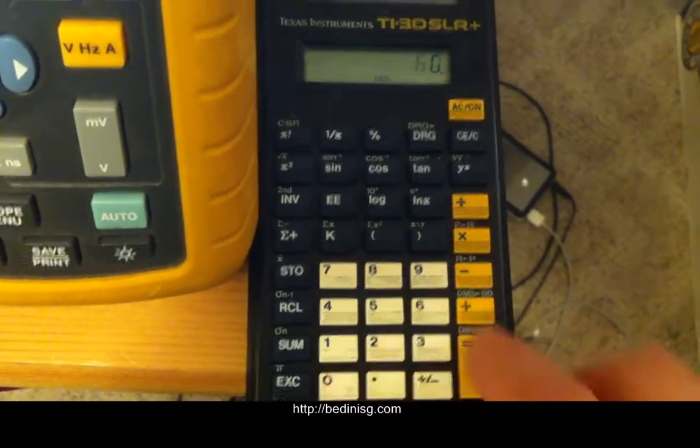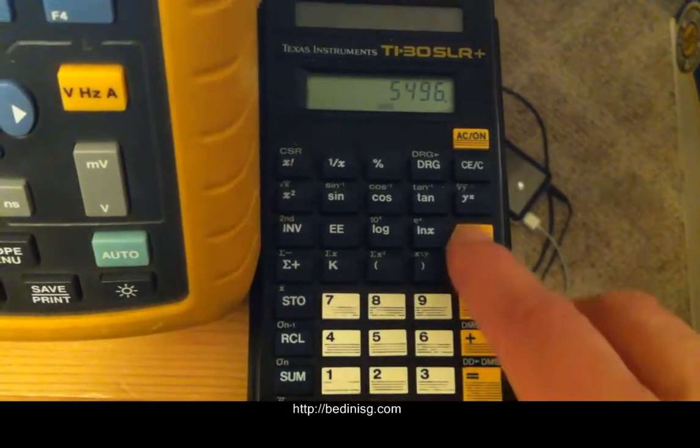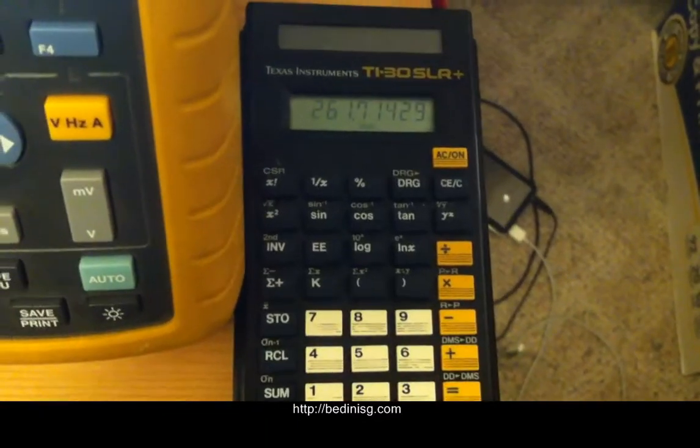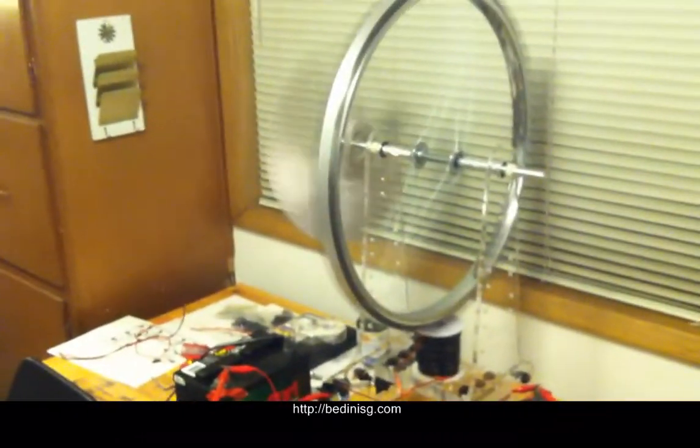So 91.6 times 60 divided by 21 magnets, yeah 261. We're right there at about 10 RPM difference. Not really significant there.